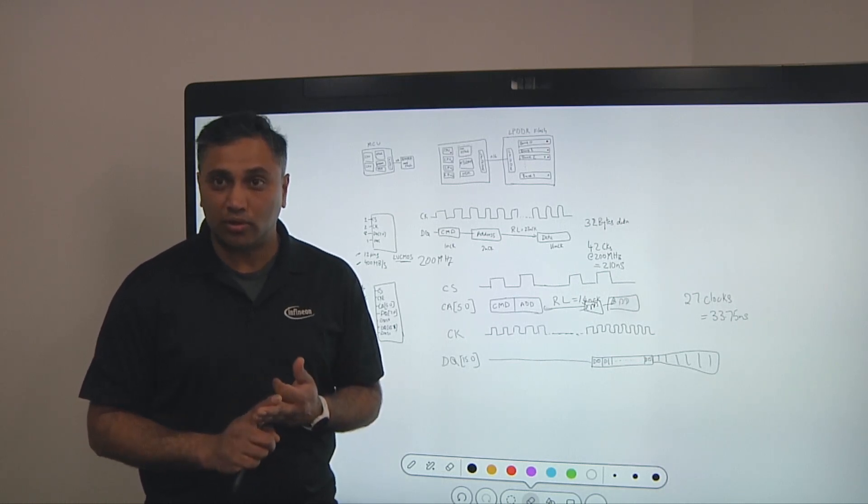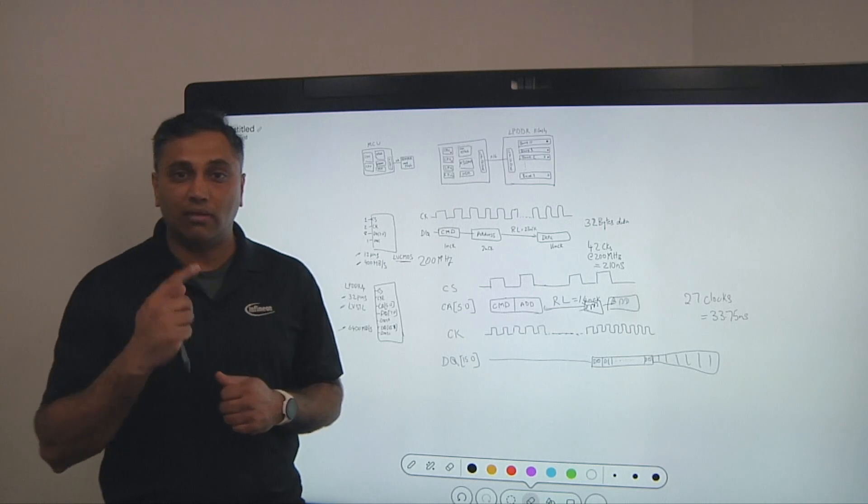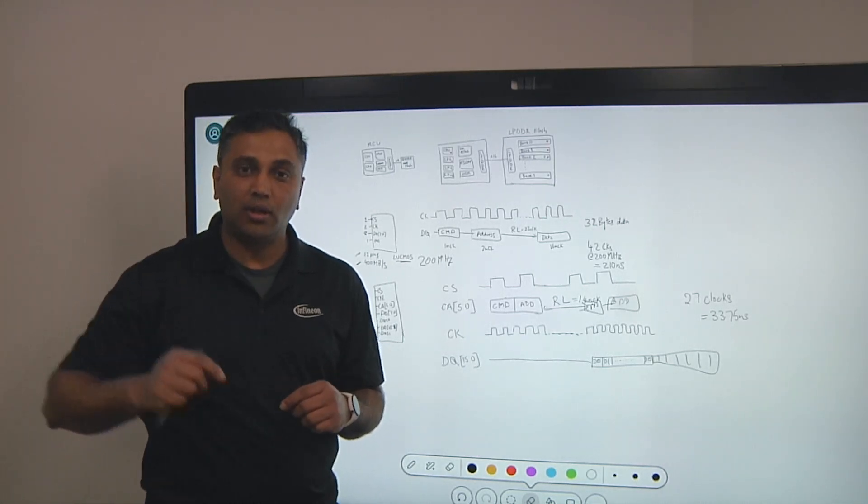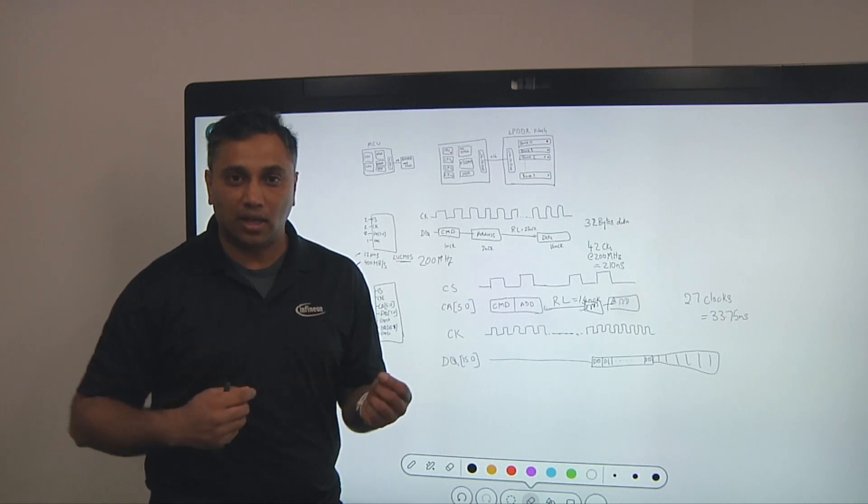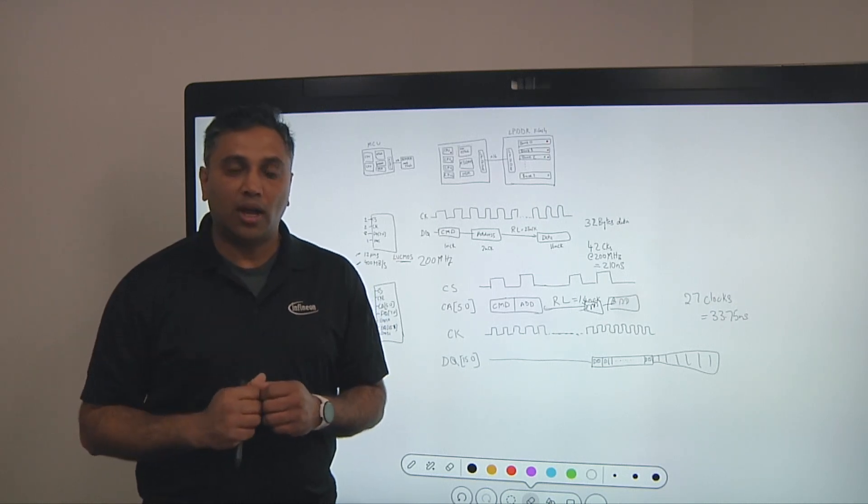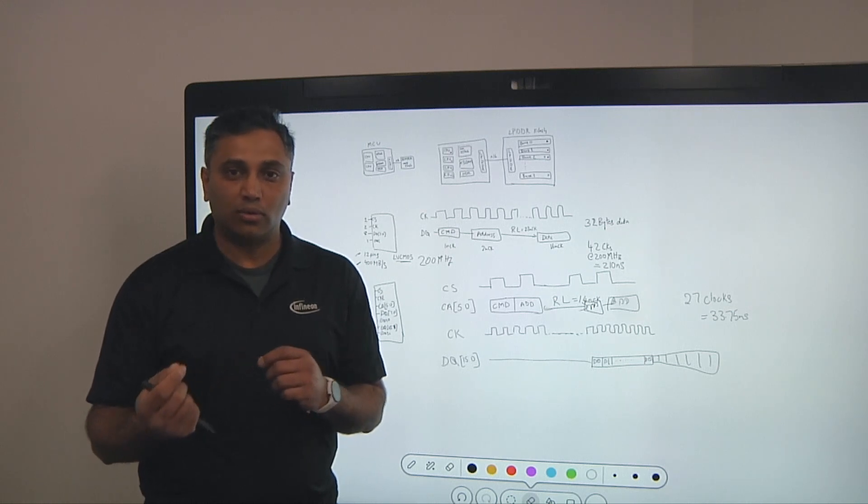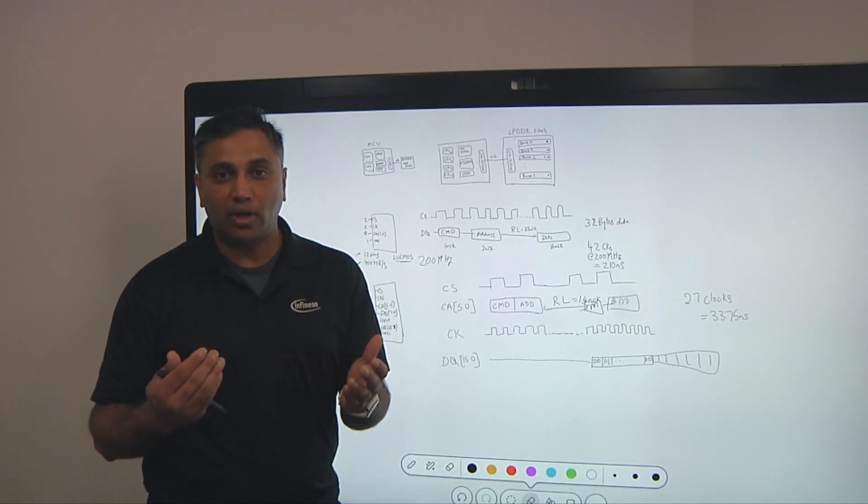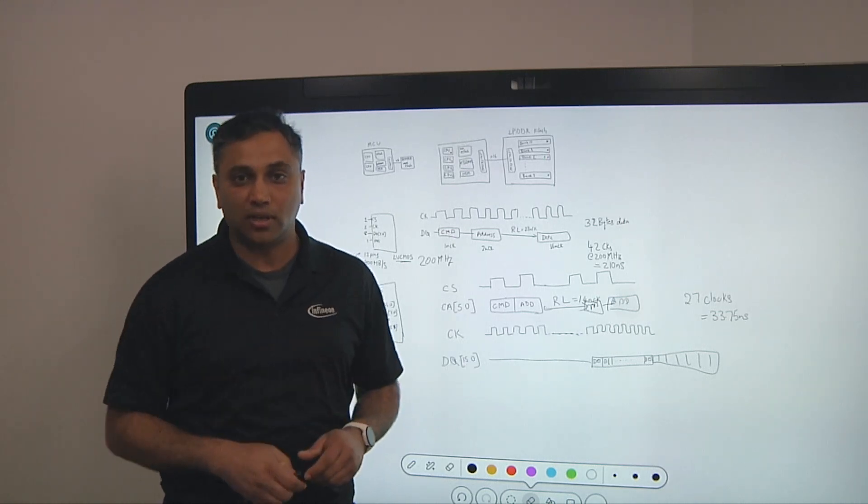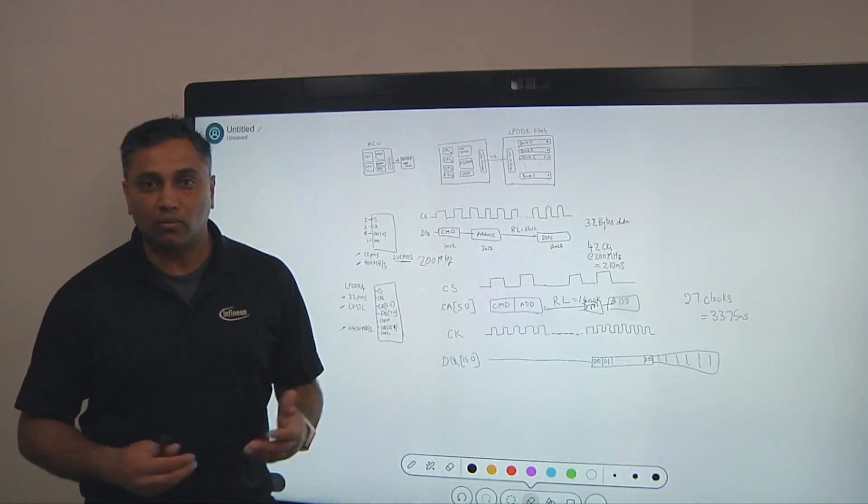And that happens on two folds. One, I moved from an LVCMOS architecture where you were doing full swing to LVSTL, which is a lower power IO scheme. And this enables you to get to lower power. So you keep the same envelope, you're running faster, so it's less energy that you're consuming with the accesses.